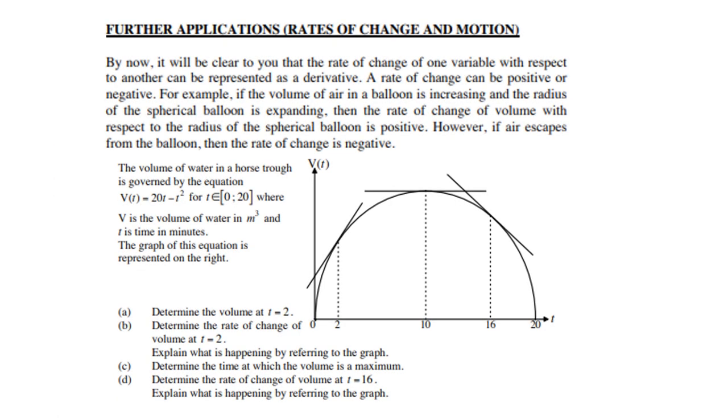Further applications of rates of change and motion. By now, it will be clear to you that the rate of change of one variable with respect to another can be represented as a derivative. A rate of change can be positive or negative. For example, if the volume of air in a balloon is increasing, and the radius of the spherical balloon is expanding, then the rate of change of volume with respect to the radius of the spherical balloon is positive. However, if air escapes from the balloon, then the rate of change is negative.